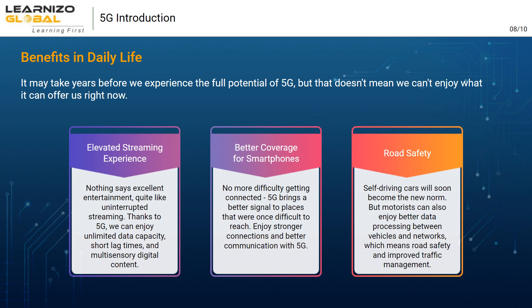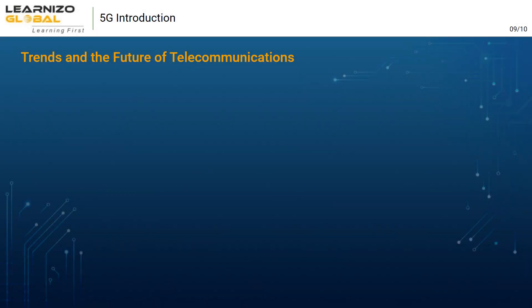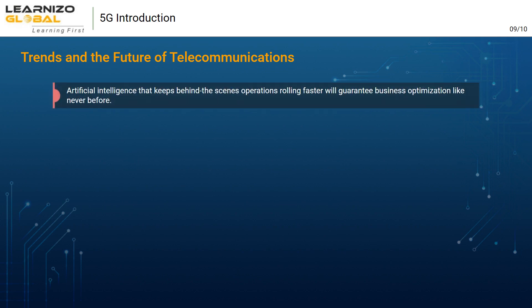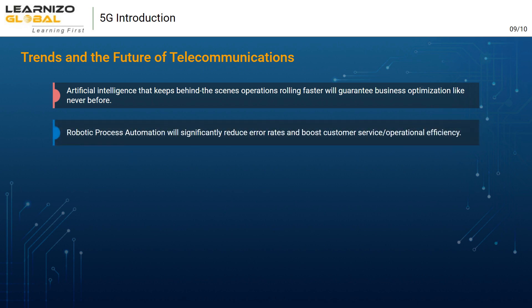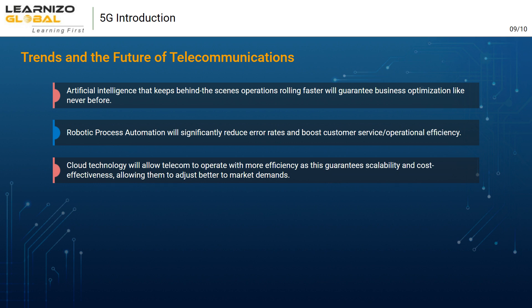Trends and the future of telecommunications: artificial intelligence that keeps behind-the-scenes operations rolling faster will guarantee business optimization like never before. Robotic process automation will significantly reduce error rates and boost customer service and operational efficiency. Cloud technology will allow telecom to operate with more efficiency, guaranteeing scalability and cost-effectiveness.